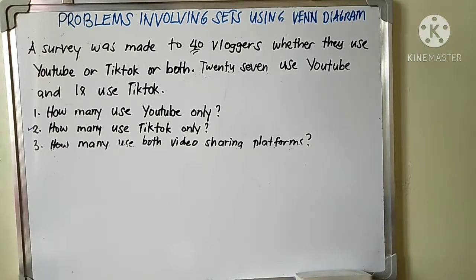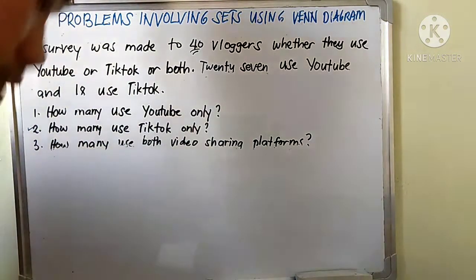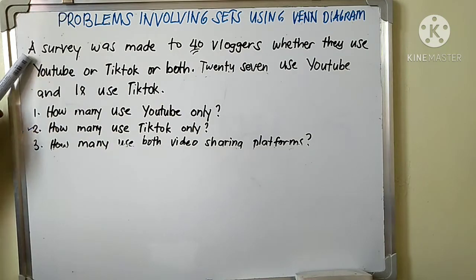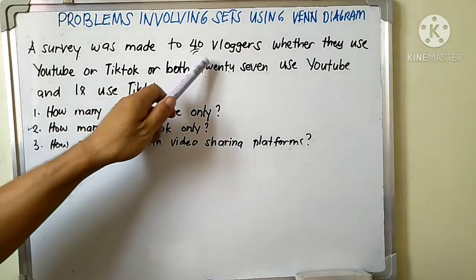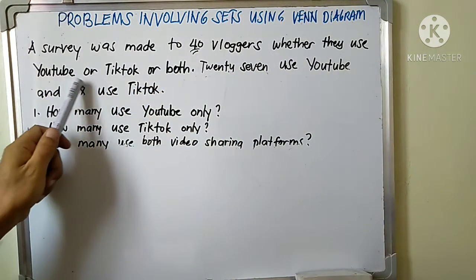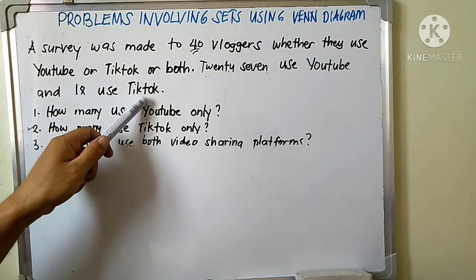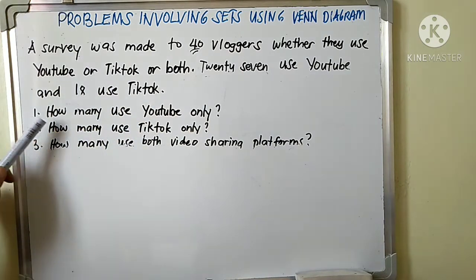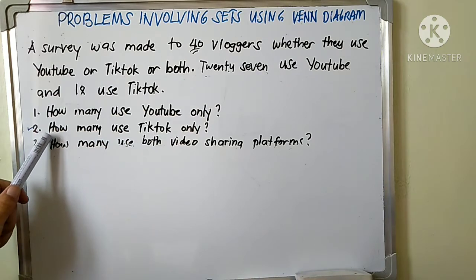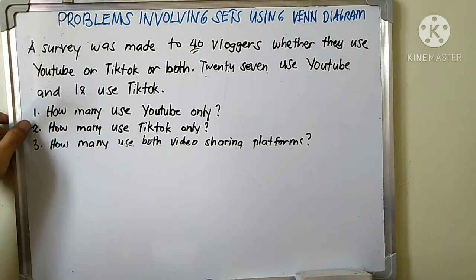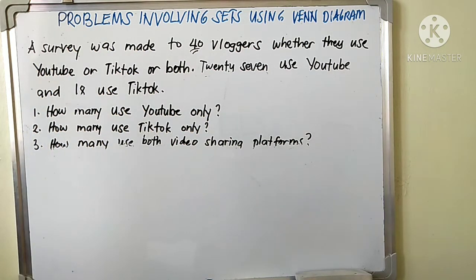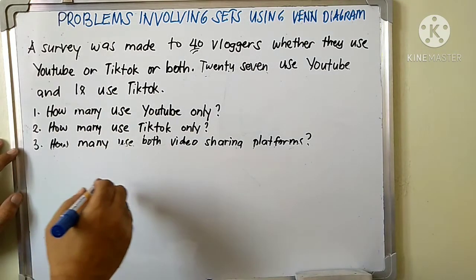Let us have a problem involving sets using Venn diagrams. A survey was made of 40 vloggers whether they use YouTube, TikTok, or both. 27 use YouTube and 18 use TikTok. How many use YouTube only? How many use TikTok only? How many use both video sharing platforms?